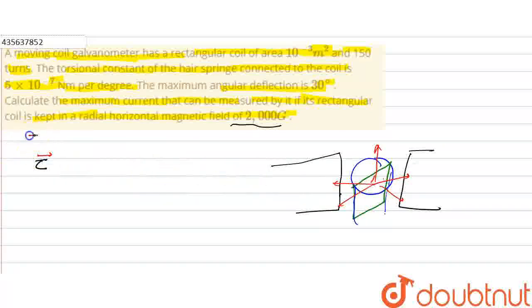Torque applied on the coil, how much will it be? It is NIAB, equal to NIA cross B. Now look at this: NIAB equals the restoring torque which will be stored in the spring.